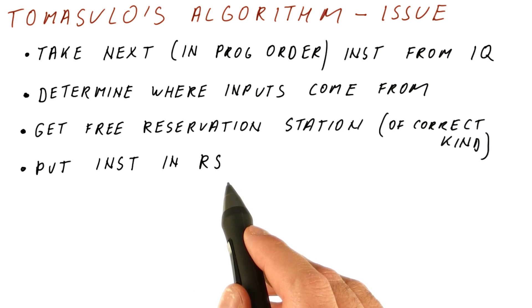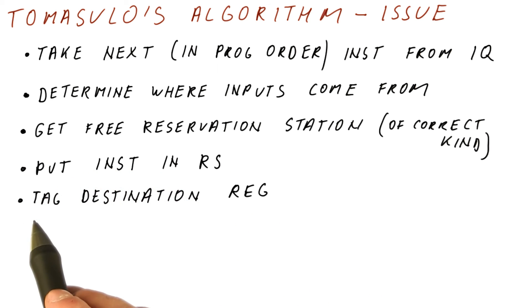We would put the instruction in the reservation station then, and we will tag the destination register of the instructions so that the result when it's produced goes there. And also so that instructions that want that register in the future will know which instruction is going to produce this value if it has not already been produced.